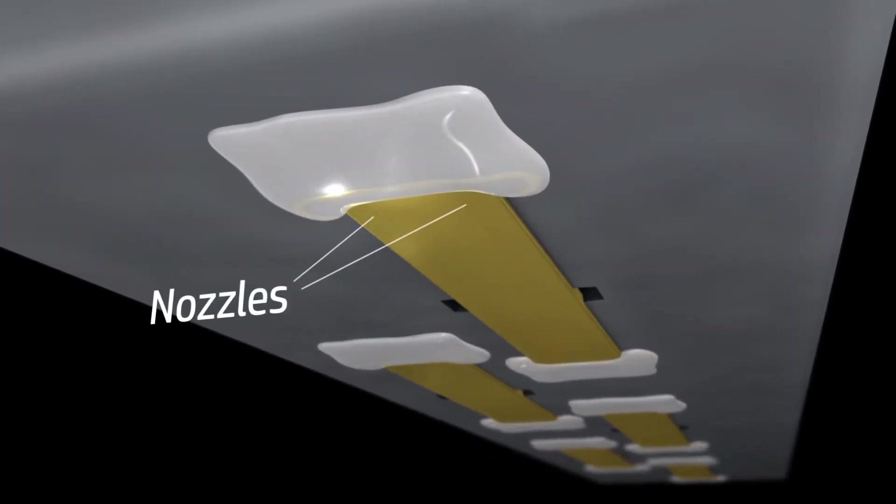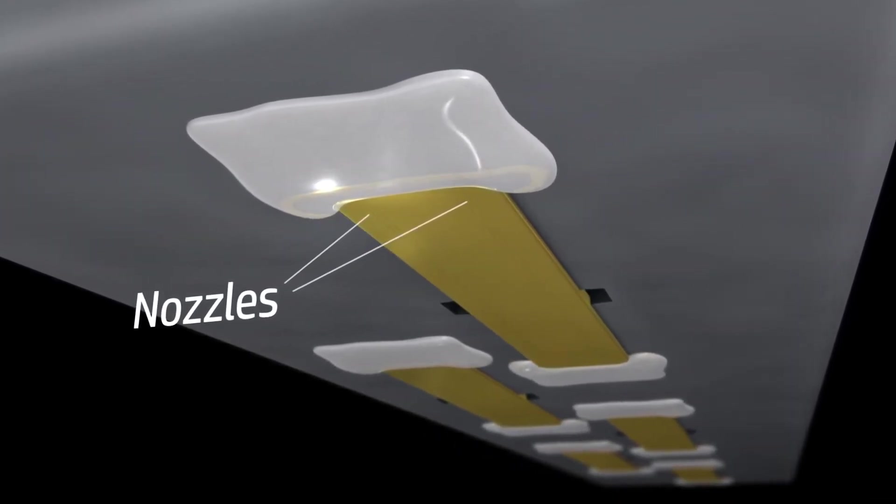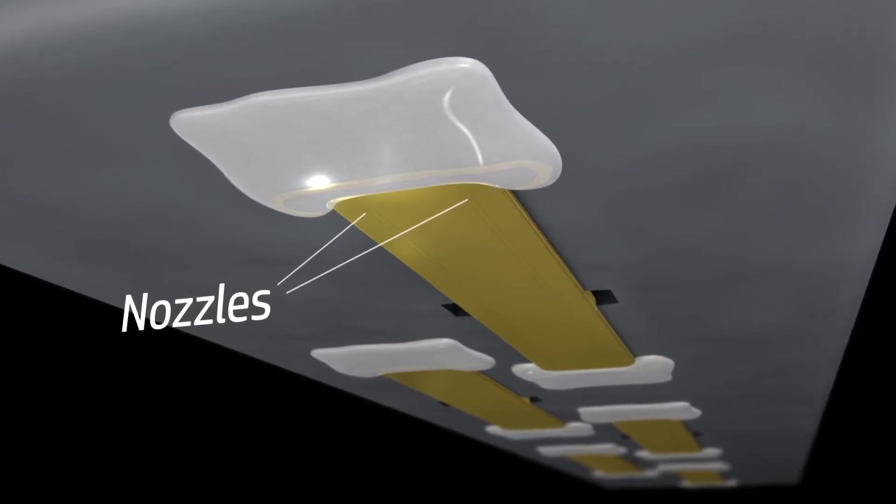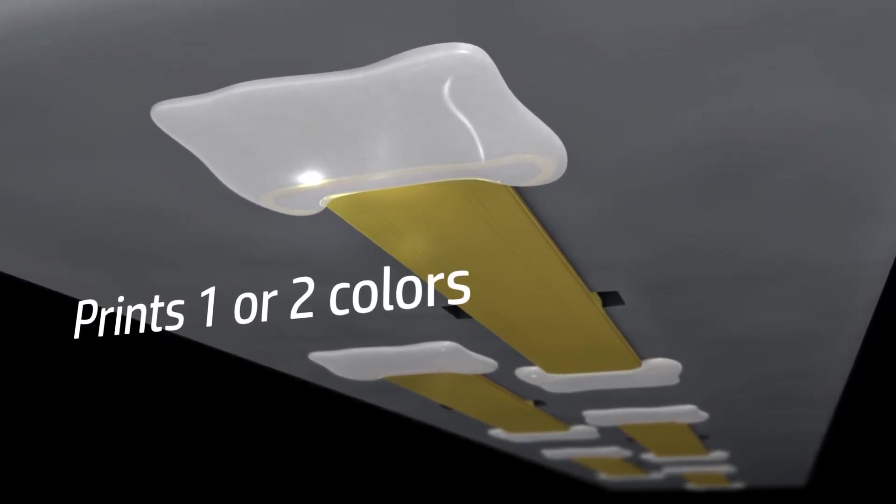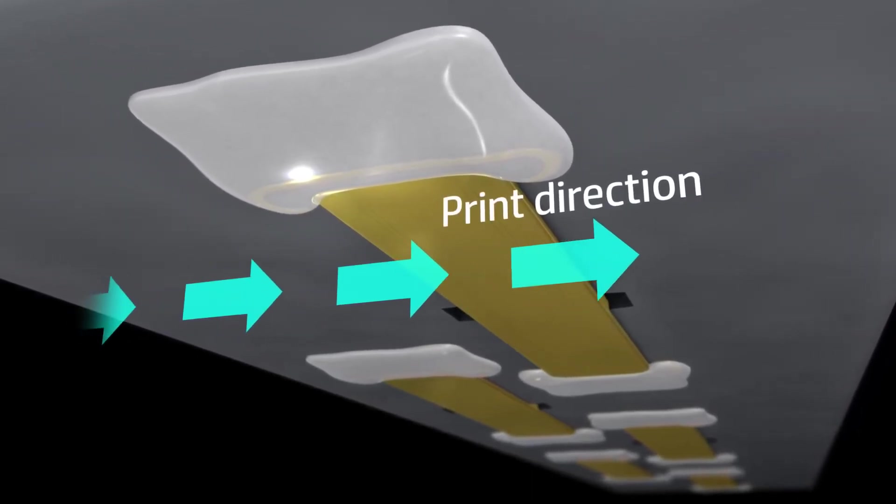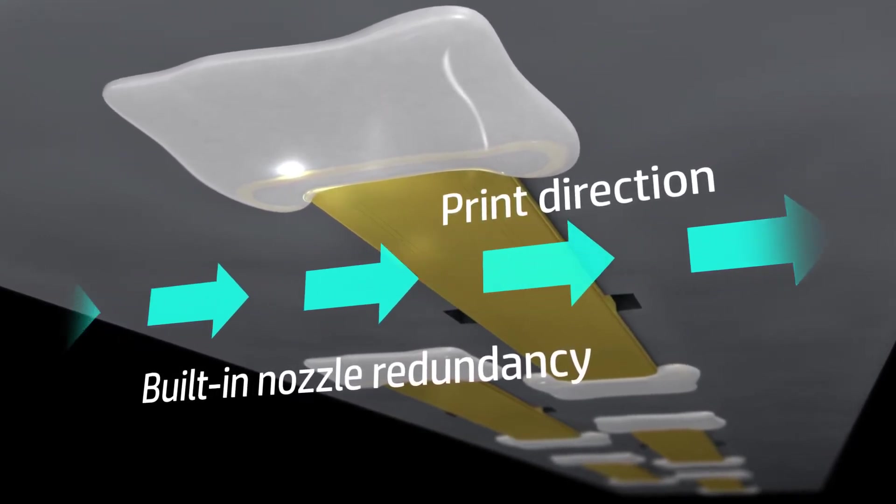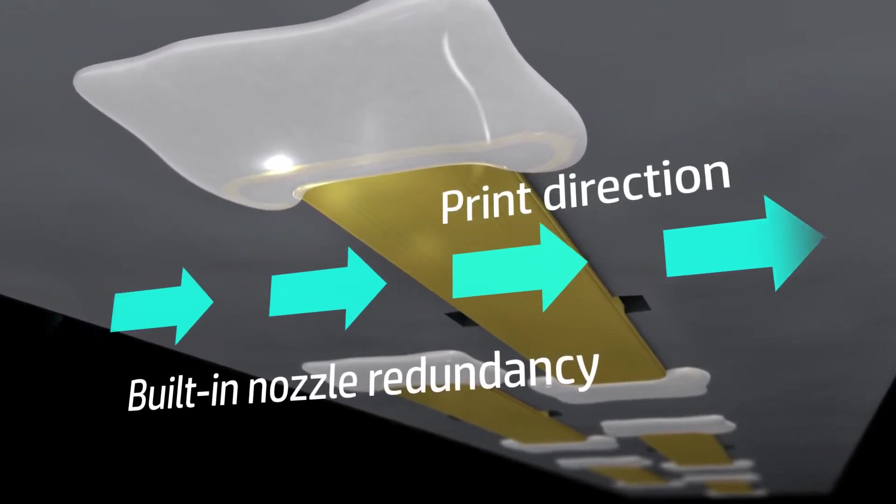There are two groups of nozzles near the left and right edges of the die. Each group has its own ink supply, so the printhead can print one or two colors. With one ink, the two groups provide built-in nozzle redundancy for reliable quality and high-speed printing.